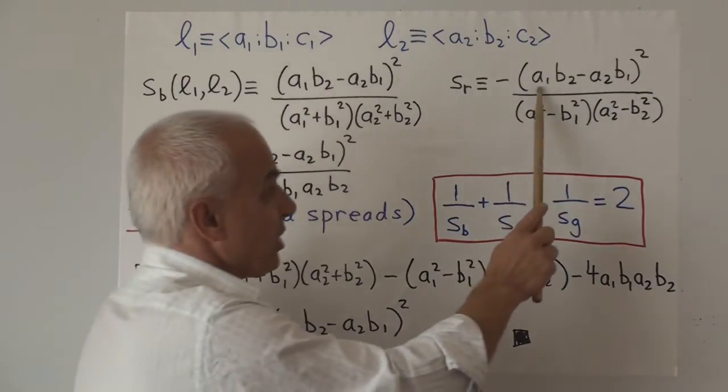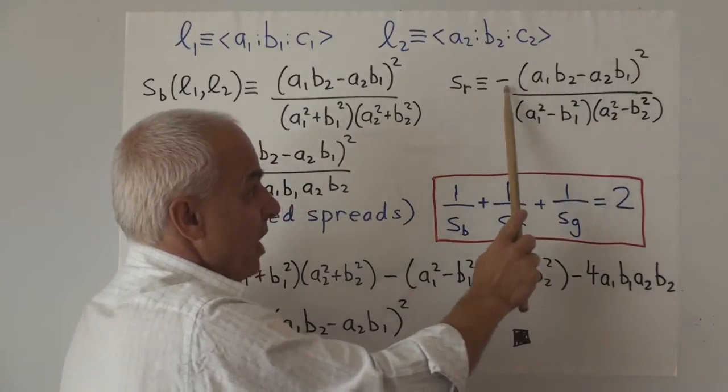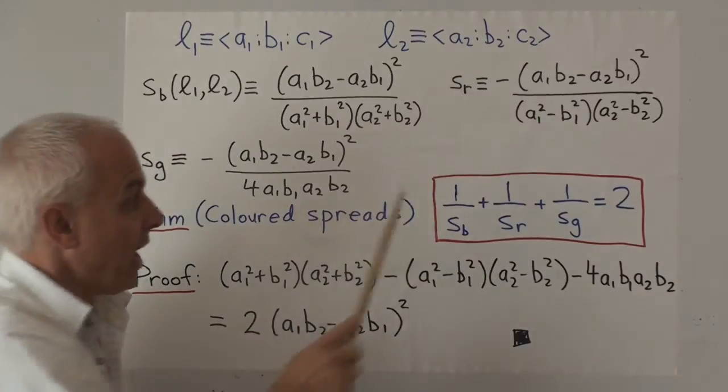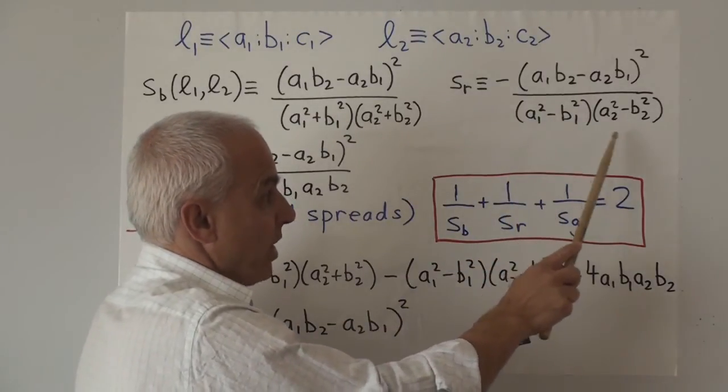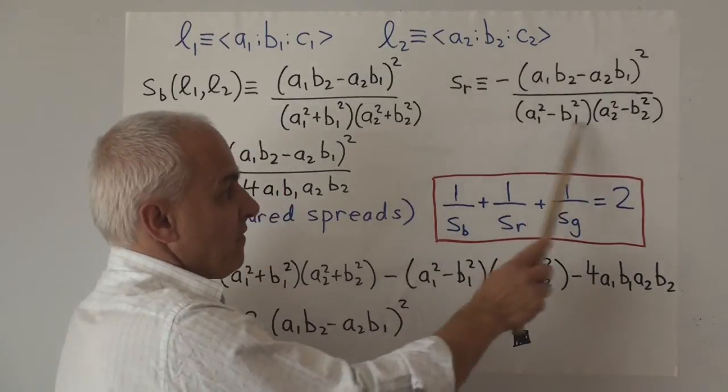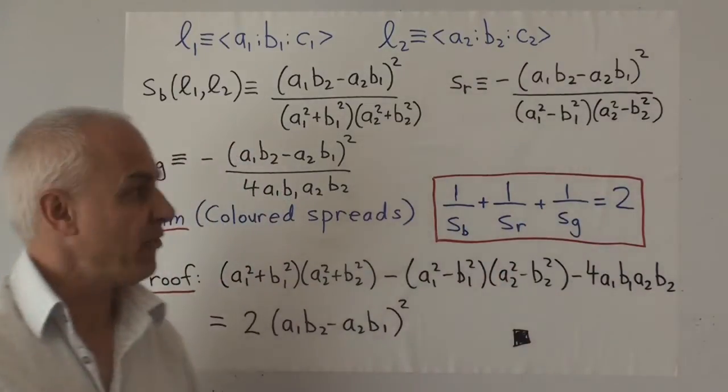And has the advantage that there's obvious analogs in the red and green settings. So here's the red spread: numerator term here is exactly the same as before, now there's a minus sign however and the denominator changes a little bit. It's (a₁² - b₁²)(a₂² - b₂²), and that's in keeping with the fact that it's a red geometry. And the green spread: same numerator term, there's also minus sign, and now the denominator changes quite a lot, it's 4a₁b₁a₂b₂.